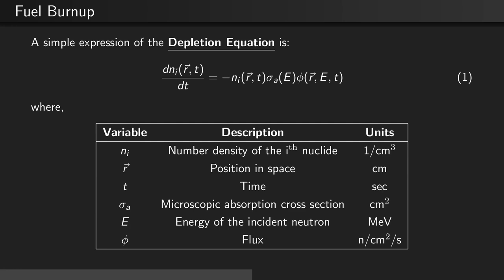A simple expression of the depletion equation is dNi/dt equals minus Ni sigma A phi, where Ni is the number density of the i-th nuclide in units of 1 per centimeter cubed, R is the position in space in centimeters, T is the time in seconds, sigma A is the microscopic absorption cross-section in units of centimeters squared, E is the energy of the incident neutron in MeV, and phi is the neutron flux in neutrons per centimeter squared per second.